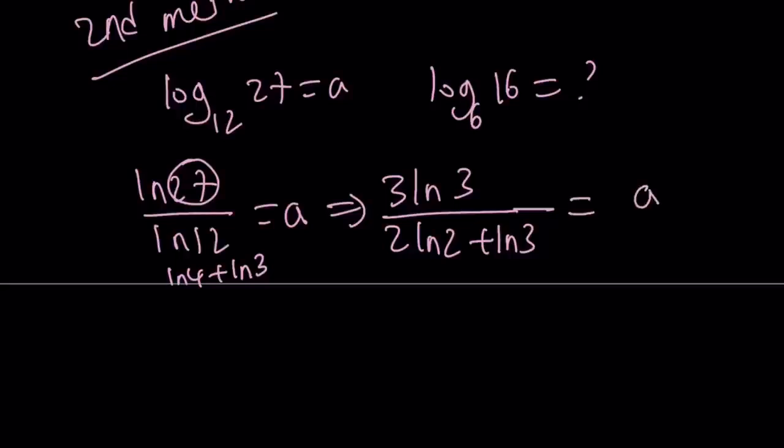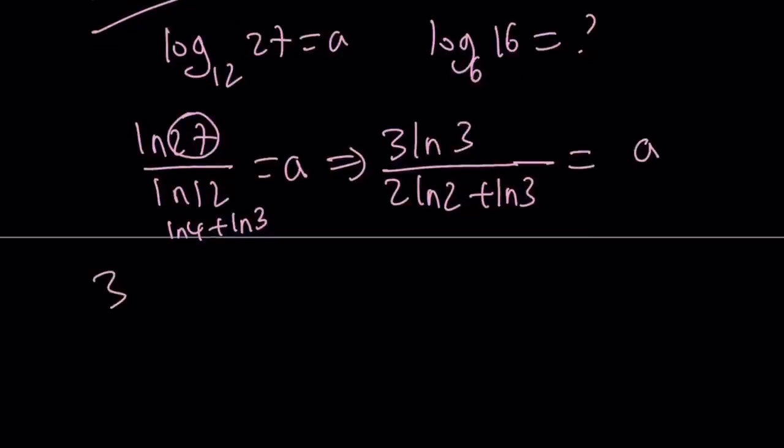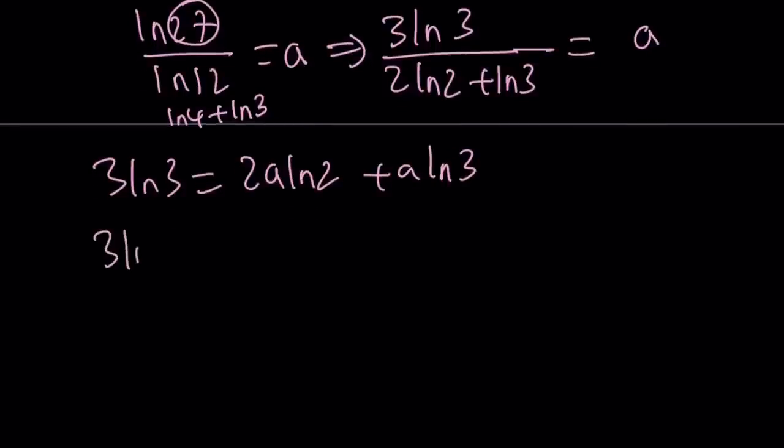Awesome. What am I going to do here? Well, we're just going to cross-multiply. Let's see what happens. 3·ln(3) equals 2A·ln(2) + A·ln(3). So this is a little messy, but here's the idea.